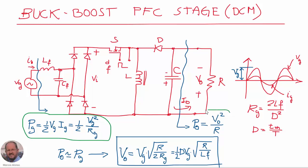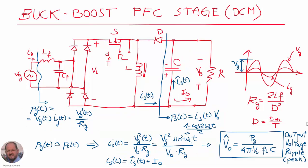We also know that the output power is going to be vo squared divided by the load resistance R. By considering approximately 100% efficiency, both powers are going to be equal, and then we can obtain this expression for the DC output voltage of our converter.